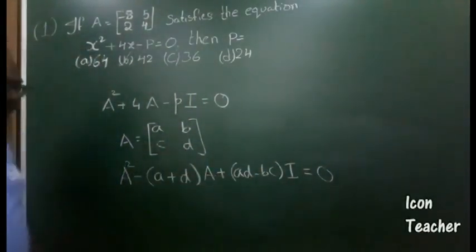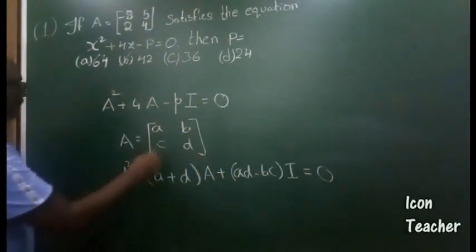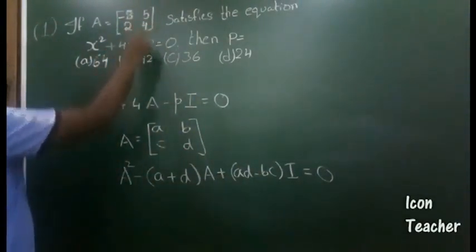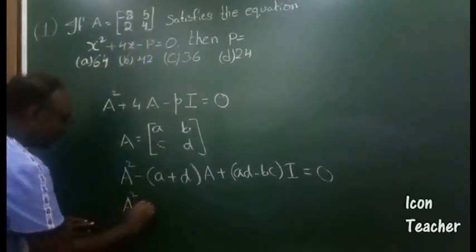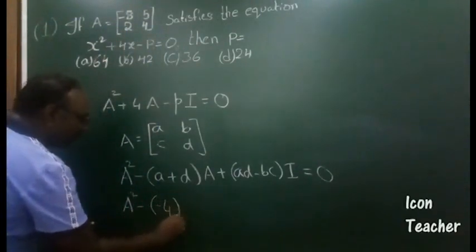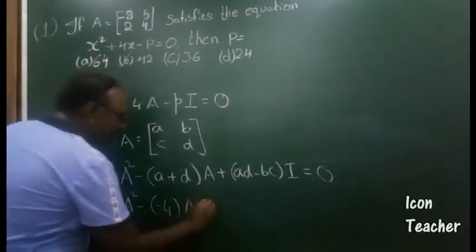Okay, now if you see here: -8 + 4 is -4, so I write it as A² - (-4)A plus ad - bc, which is nothing but the determinant...